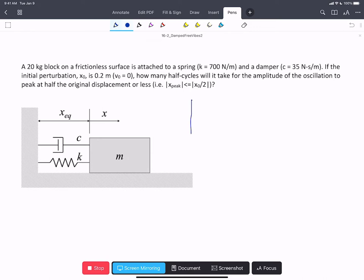So if we draw what this might look like, we have a system starting at x0 that's oscillating, and the peaks are reducing. And eventually, we'll get a peak that occurs below x0 divided by 2.